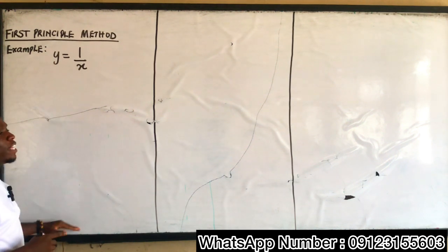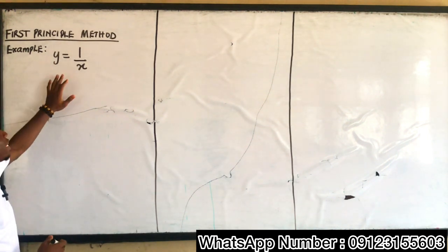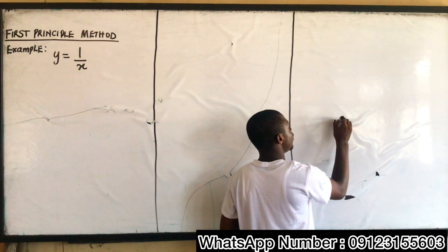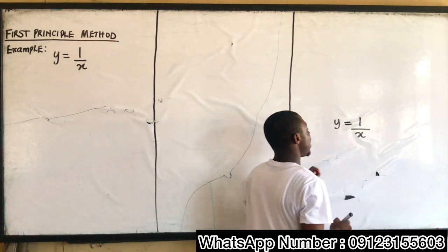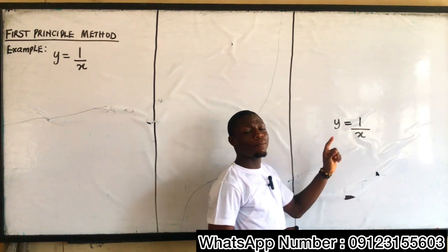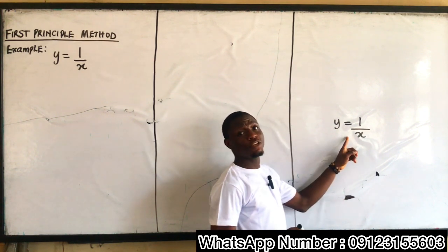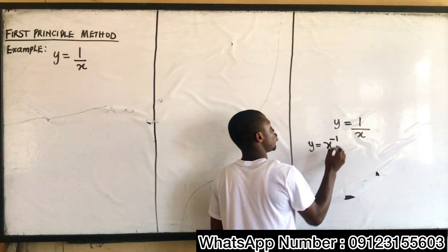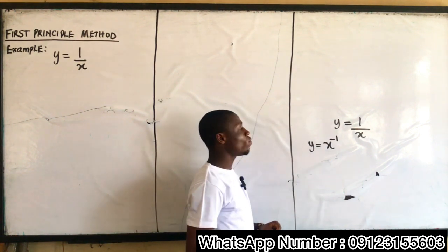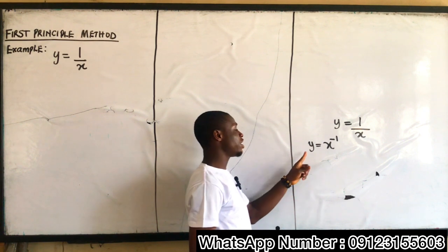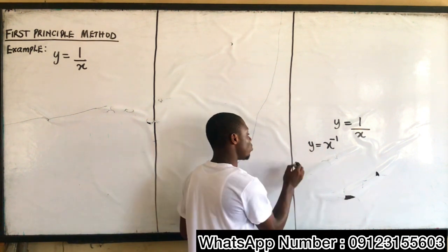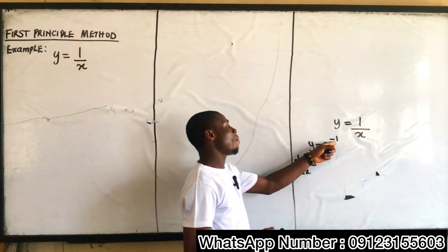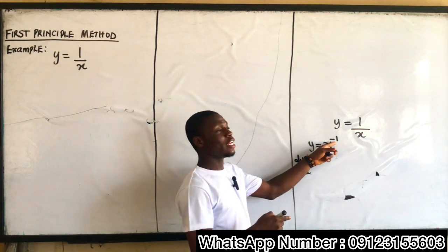If I apply my first principle method, let me recall for you guys — let's use our general method first and see what we have. If I have y equal to 1 over x and I'm told to solve it using the general method, my first task is to convert this into index form: y is equal to x to the power of negative 1. Now, if I apply my general method, I am differentiating y with respect to x. I multiply by the power.